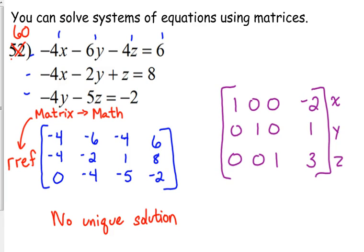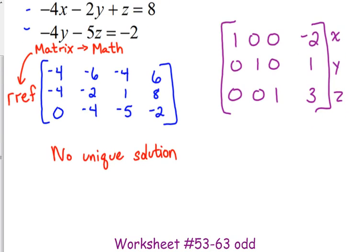So I want you to get some practice with typing this in, making sure you've got the details, finding the rref, looking for the row of diagonals and everything else being zero. And then that last column is going to be your x, y, and z. So on your worksheets, I want you to look at 53 through 63 odd.